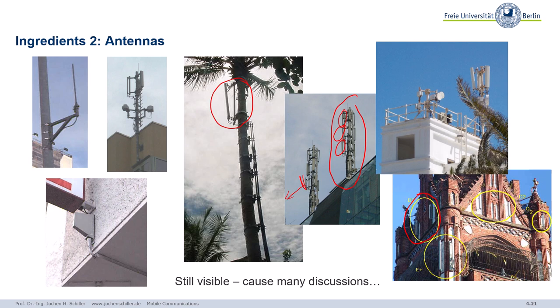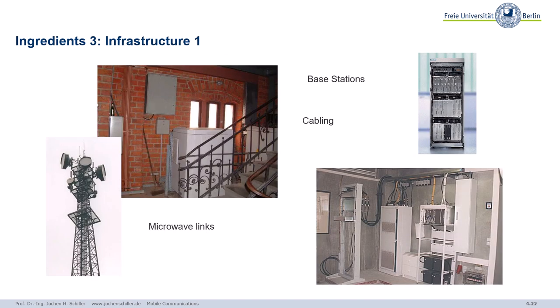What else do we need? We need a lot more infrastructure. If we look at the infrastructure, we again see antennas, but this time huge antennas. Just look around in the city — from time to time you will see those huge antenna systems with many different types of antennas. This is typically needed for mobile service switching centers where you concentrate the data, the calls, and forward them.